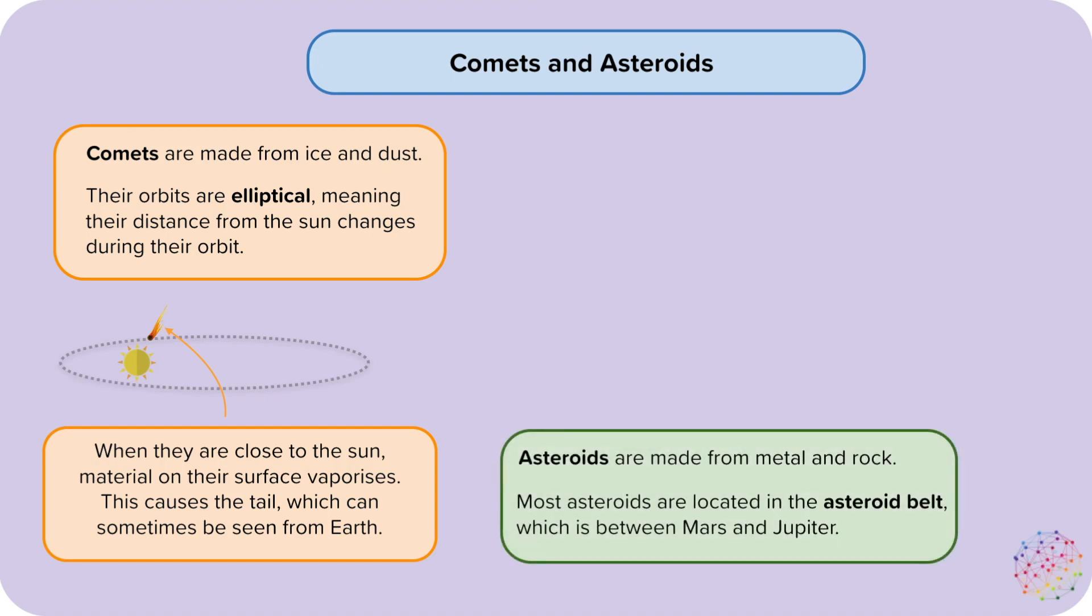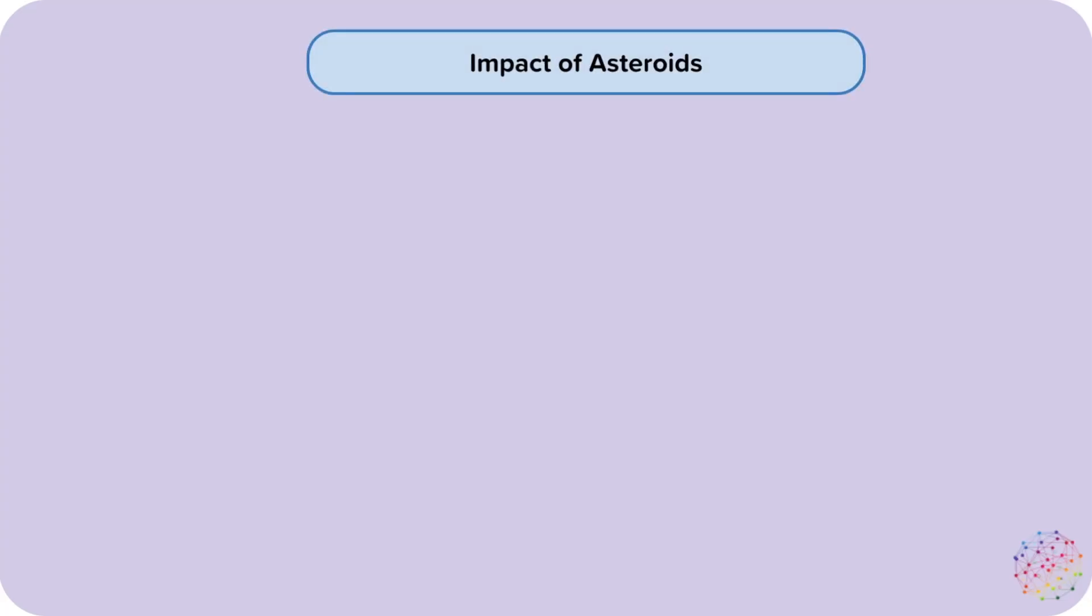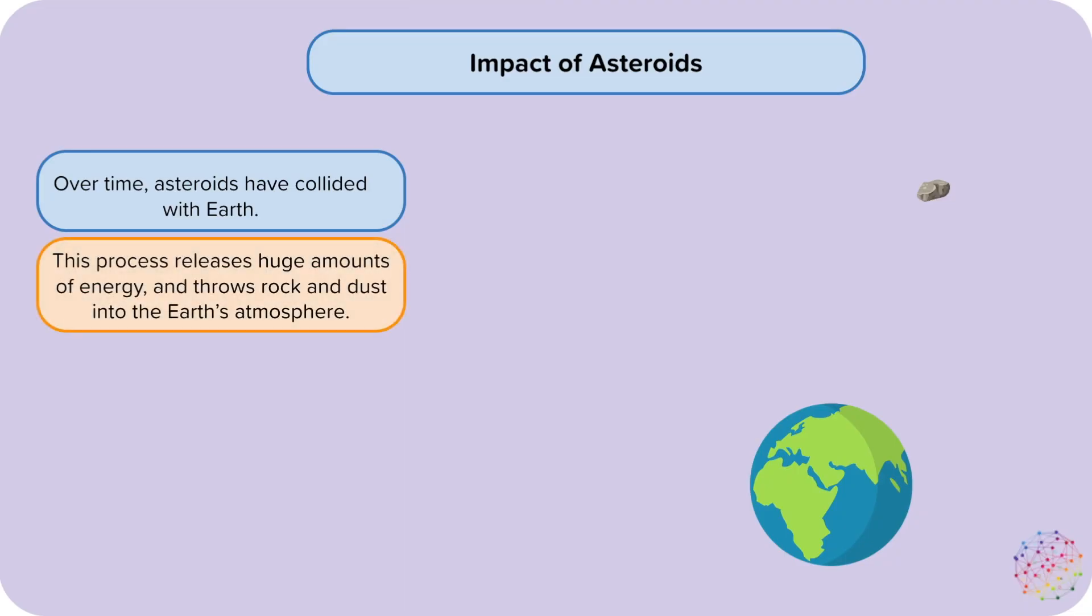Asteroids are made from metal and rock. Most asteroids are located in the asteroid belt, which is between Mars and Jupiter. Over time, asteroids have collided with Earth. This process releases huge amounts of energy and throws rock and dust into the Earth's atmosphere.